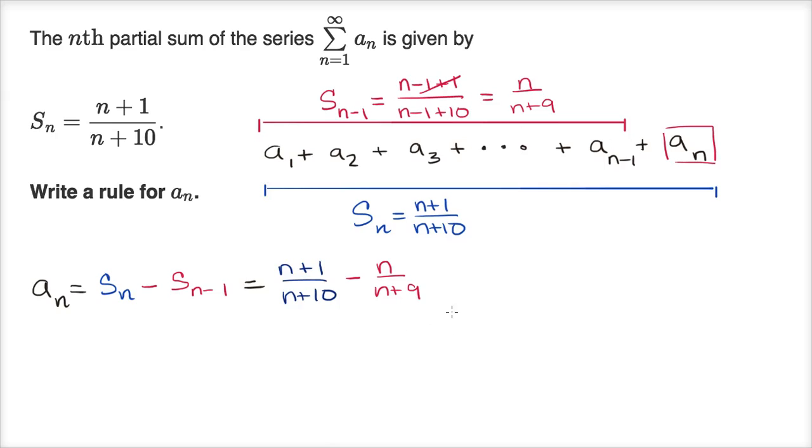We can add these two fractions by having a common denominator. So if we multiply the numerator and denominator here times (n+9), we are going to get, so this is equal to (n+1)(n+9)/(n+10)(n+9).